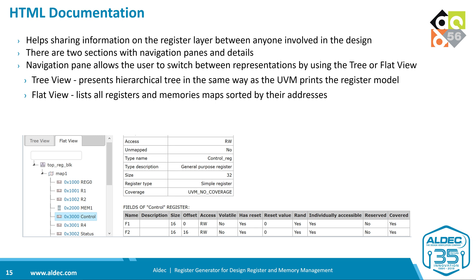The last output file is the HTML documentation, which helps share information about the register layer between everyone involved in the project. There are two sections: the first is a navigation pane, and the second shows register details. The navigation pane allows switching between two data representation types — the tree view, which presents a hierarchical tree in the same way UVM prints a register model, and the flat view, which lists all registers and memories sorted by their addresses.